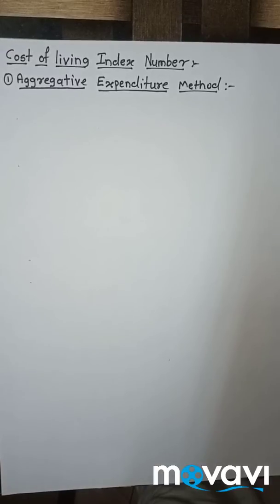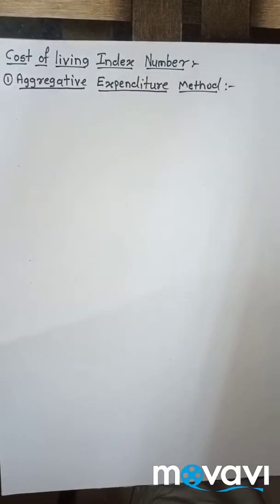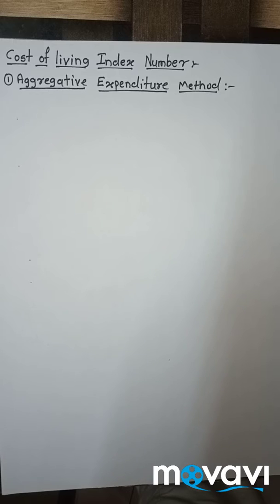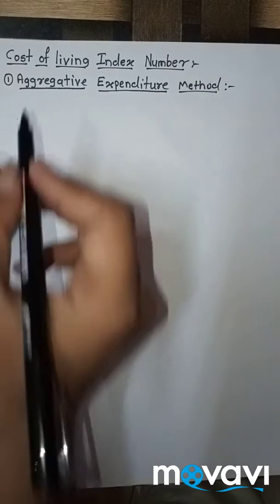Hello Friends! Our today's concept is cost of living index number. The first method to find cost of living index number is the aggregative expenditure method.